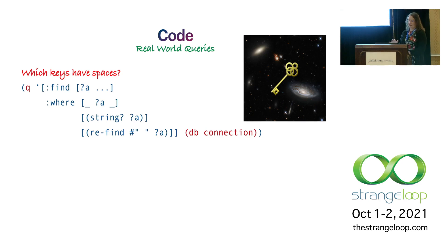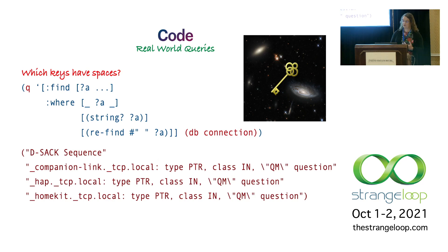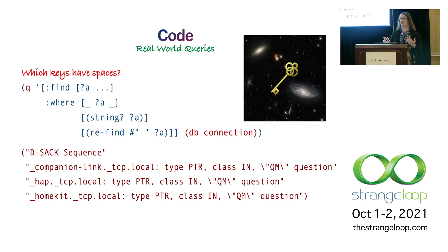Once data's been loaded, you can issue queries against it immediately. This is a real-world case someone approached me with — they had a large packet capture file full of deeply nested objects with spaces in some of the keys. The query asks for all statements where the attribute is a string matching a space regular expression, regardless of entity or value. Having everything thrown into a graph makes this sort of data very easy to search, and it becomes easy to navigate through data you haven't seen before.